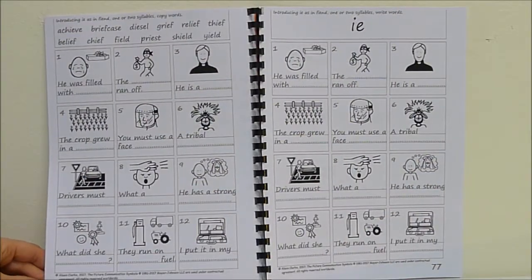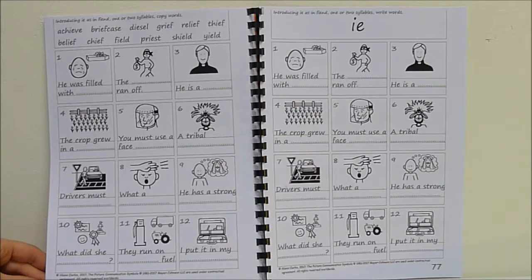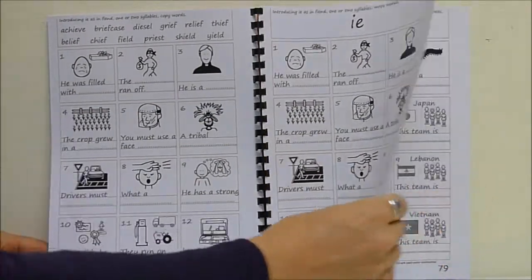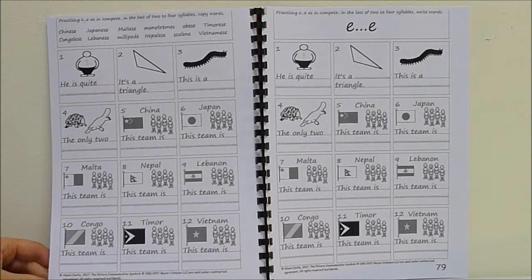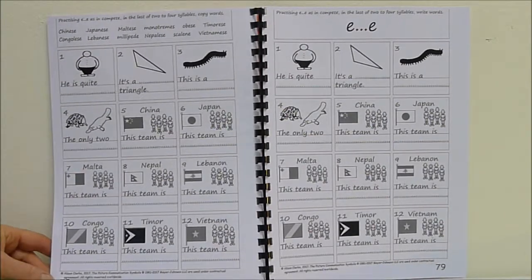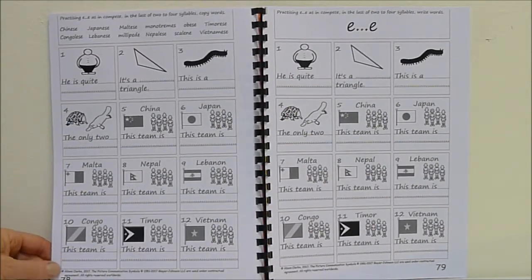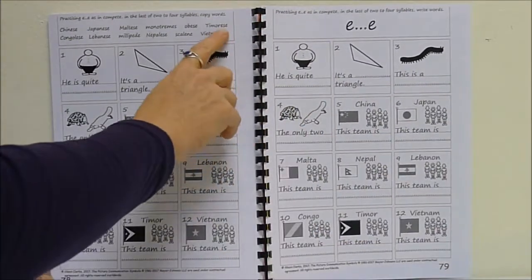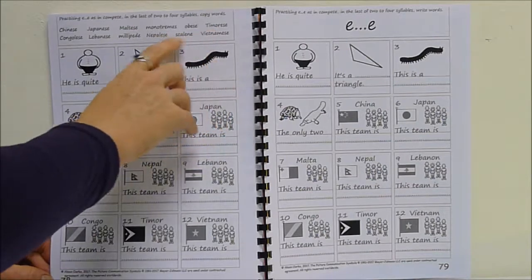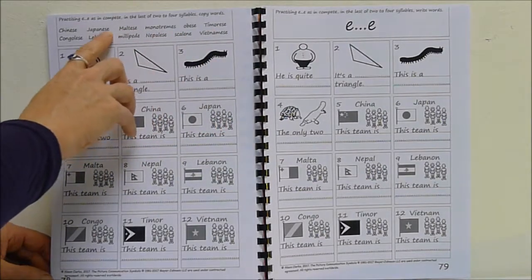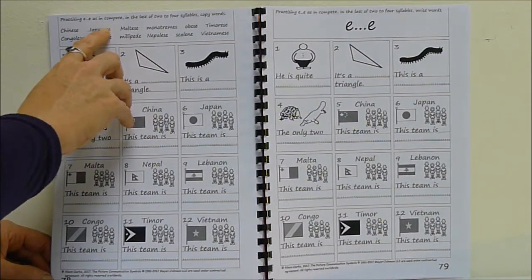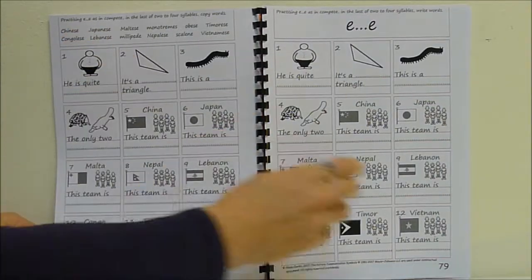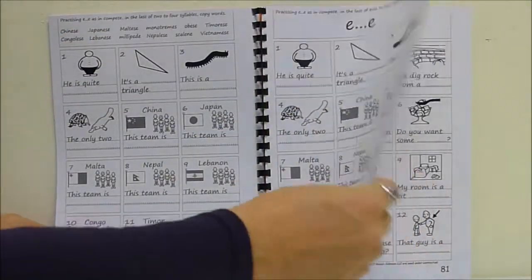And then we get to E with IE as in priest and field and grief and yield. And E with E something E as in Timorese, Obese, Maltese, Lebanese, which sometimes carries the meaning. The people from Timor, the people from Malta, the people from Japan. So that can be, that E-S-E can be a morpheme as well, a meaningful word part.